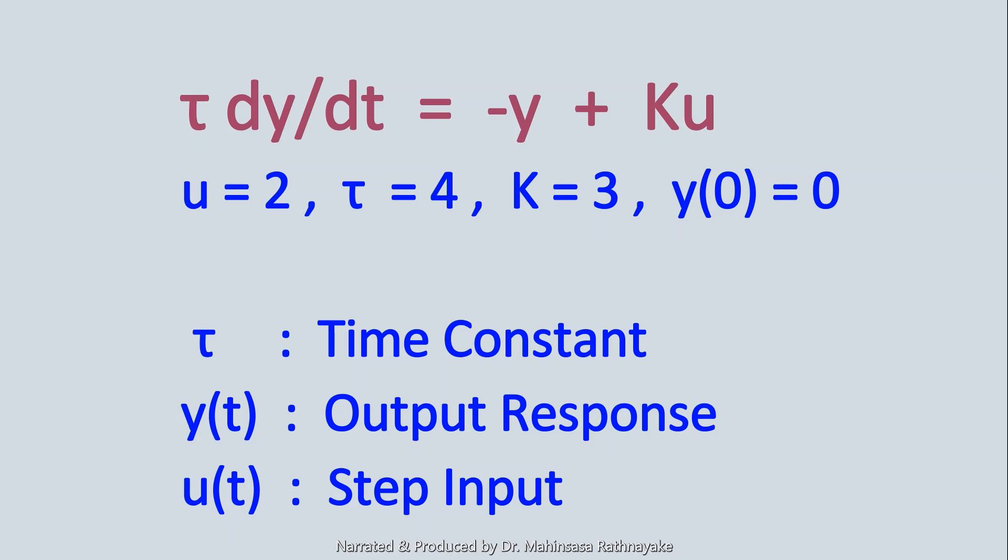In a process control loop we know that there should be an input signal and output response. If you haven't learned the process control subject as a chemical engineering student, you will probably learn in the final year of your curriculum. In our differential equation we have tau that is the time constant, y is the gain or the output signal, and u is the step input. Both these u and y are functions of time. We are familiar with the problem now, so let's go to MATLAB.